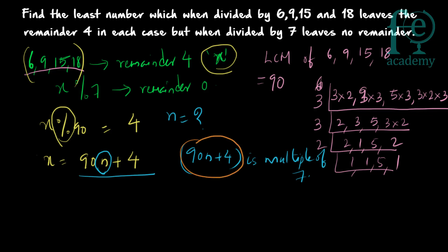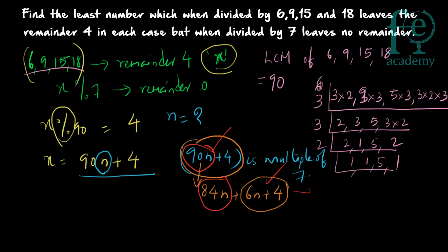The nearest multiple of 7 close to 90 is 84, since 12×7 = 84. So 90n + 4 = 84n + 6n + 4. Since 84n is already a multiple of 7, the remaining term 6n + 4 must also be a multiple of 7, so that 90n + 4 is a multiple of 7.